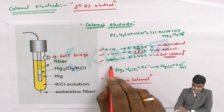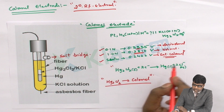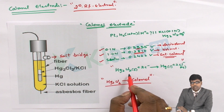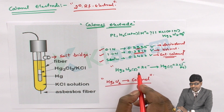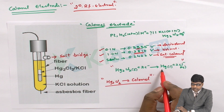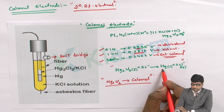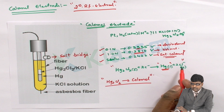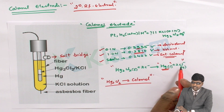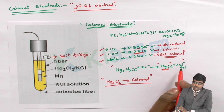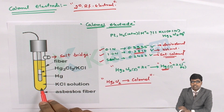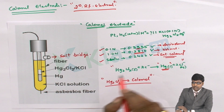The reduction reaction involved in the Calomel electrode is: mercurous chloride accepts two electrons and produces liquid mercury metal plus chloride ions. These chloride ions are common to both the mercurous chloride and the KCl solution present in the electrode.